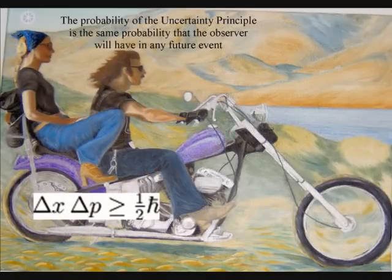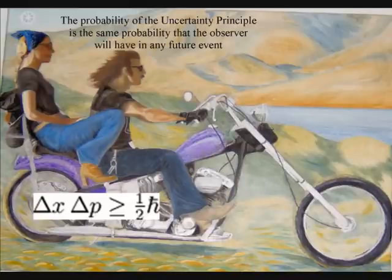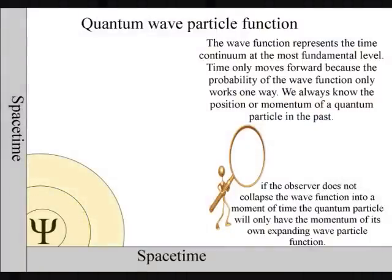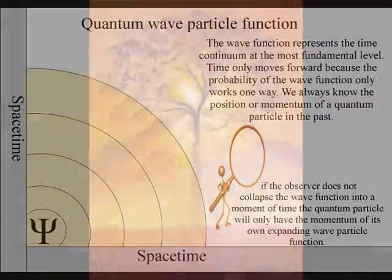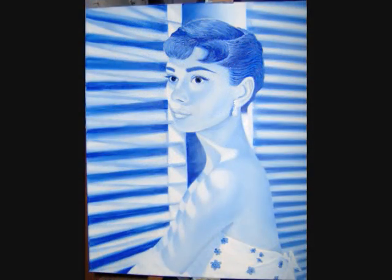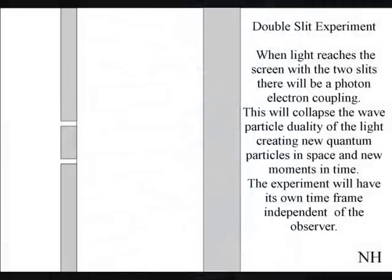If the observer does not collapse the quantum-wave-particle function, the quantum-particle will only have the momentum of its own wave-function. Because light is electromagnetic radiation in the visible spectrum, this process is visible to us.